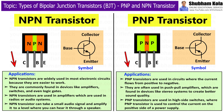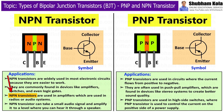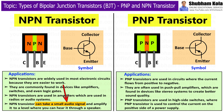Now let's look at the applications of NPN and PNP transistors. NPN transistors are widely used in most electronic circuits because they are easier to work with. They are commonly found in devices like amplifiers, switches, and logic gates. NPN transistors are used in radios and audio systems, where they can take small audio signals and amplify them to a level where you can hear it through a speaker.